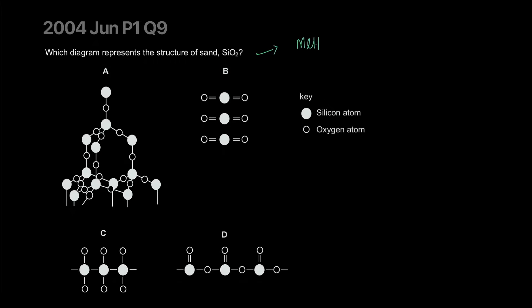It can't be a simple covalent compound because simple covalent compounds have low melting boiling points because they're gases and liquids. Anything you can visualize that melts easily is a gas or is a liquid at room temperature is very likely a simple covalent structure. The correct answer is obviously A because that's a macromolecule. Silicon dioxide is a giant covalent structure.